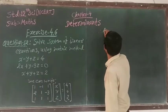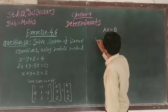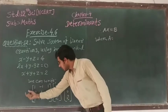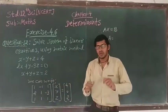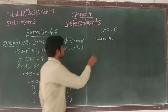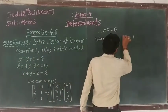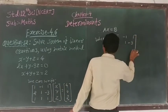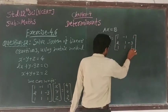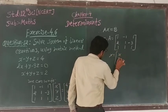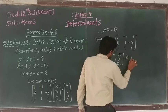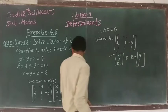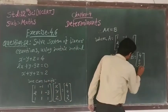So we can write AX equals B, where A is equal to [1, -1, 1; 2, 1, -2; 1, 1, 1], X is equal to [x; y; z], and B is equal to [4; 0; 2].